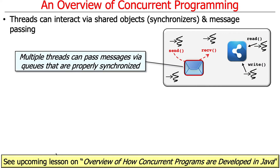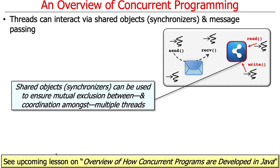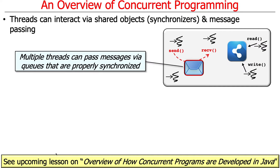Multiple threads can also pass messages via properly synchronized queues. This message passing approach allows two or more threads to pass messages to each other via thread-safe queues, using send and receive operations.